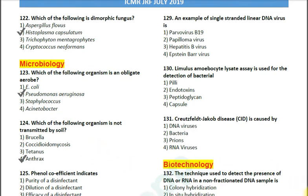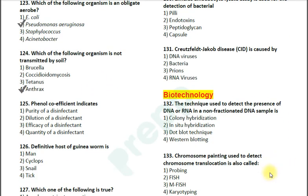Question number 125: Phenol coefficient indicates — option 1: purity of a disinfectant; option 2: dilution of a disinfectant; option 3: efficacy of a disinfectant; option 4: quantity of a disinfectant. The correct answer is option 3 — efficacy of a disinfectant.